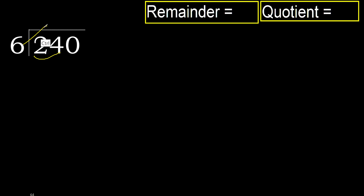30 is greater. Multiplied by 4 is 24. 24 is not greater, ok.